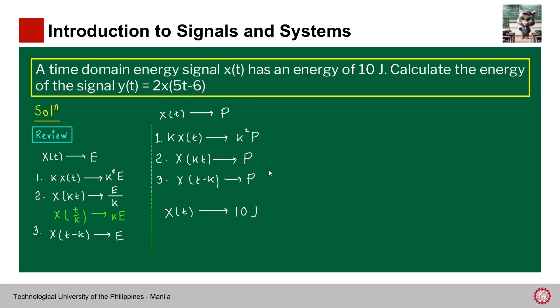So the first one is amplitude scaling. So we have 2x(t), 2 into x(t). So what will be the result? So the result of this one, as we can see from the concept that we have reviewed, it is multiplied by the square of the constant that we multiply. So in this case, we have 2 squared into 10 joules. And that would give 40 joules.